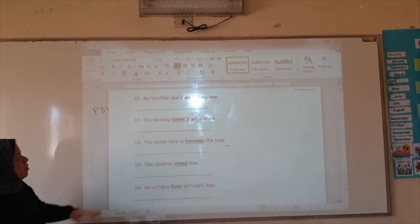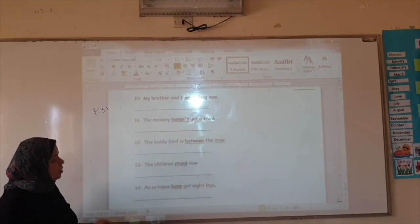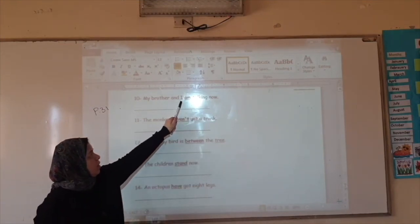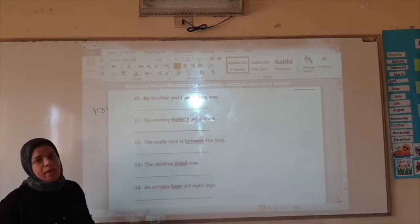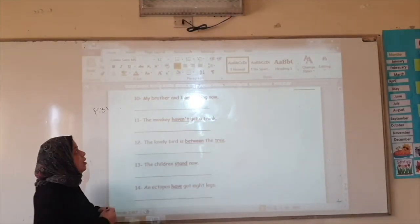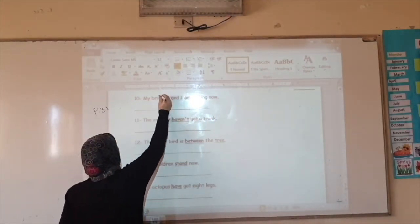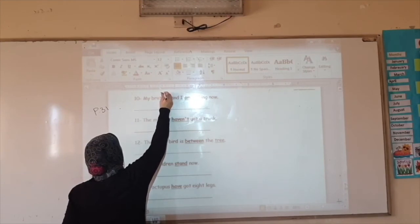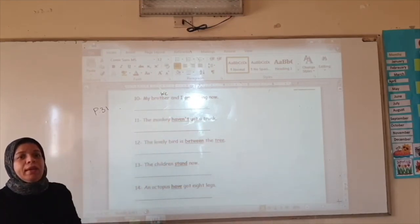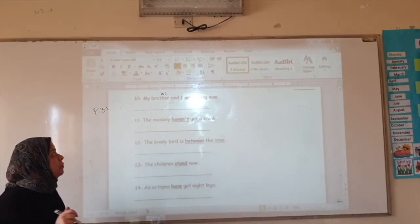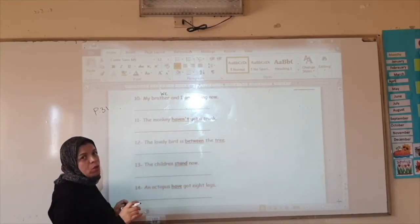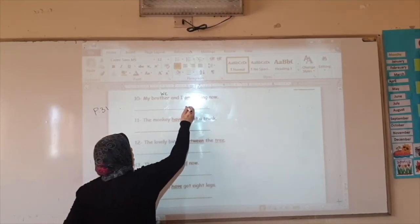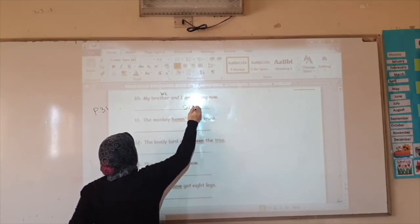Number ten. My brother and I. Some of you, whenever they find the word I, will automatically say it's am. But remember that we have here my brother and I. Me and I equal what? We. Is or am or are? We are. Not am.